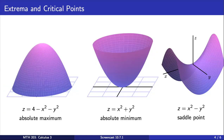Pictured here, we have examples of three functions. On the left, a function with an absolute maximum. In the middle, one with an absolute minimum. And on the right, a function with what we call a saddle point, named as such because the surface looks like a saddle. All three of these functions have critical points at the origin. However, we see that the saddle point is neither a local minimum nor maximum because points nearby have values less than or greater than the value of the function at the origin.